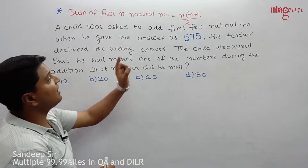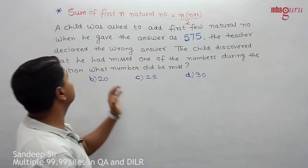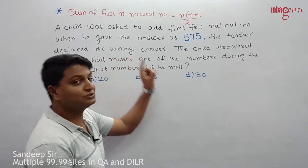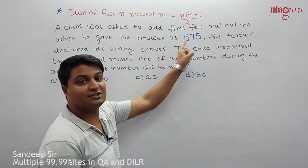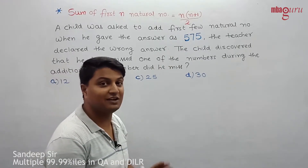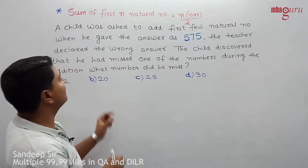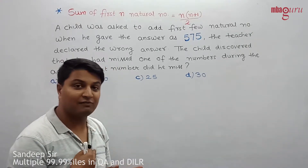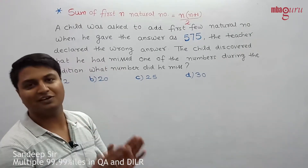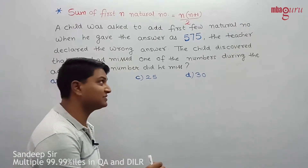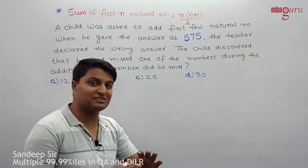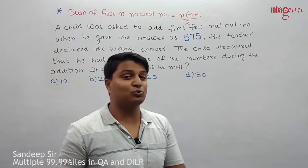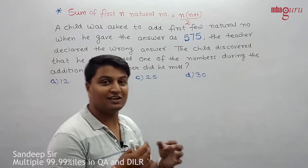This child was asked to add the first few natural numbers. When he gave the answer as 575, the teacher declared it a wrong answer. The child discovered that he had missed one of the numbers during the addition. We have to find which number he missed.